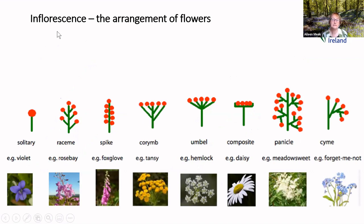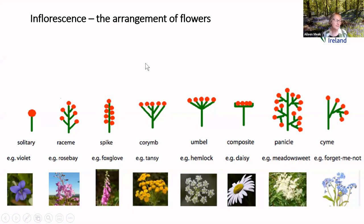Next, the arrangement of flowers is called the inflorescence, and this describes how the flowers are arranged on the stem. As you start looking at flowers you'll get to know these. For me, the easiest way to remember them is to connect an arrangement to a plant I know — for example, I know that foxglove flowers are arranged in a spike, and once you recognize that, you can compare other flowers and think what that arrangement is like. If you cannot remember, look up your glossary, because these are not all straightforward when you're starting out.